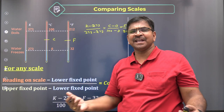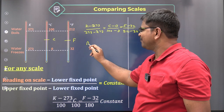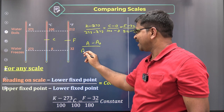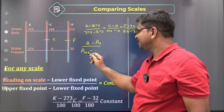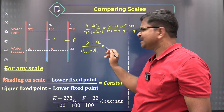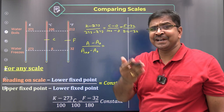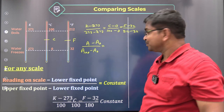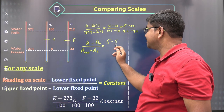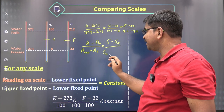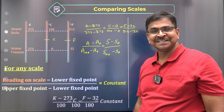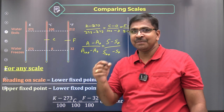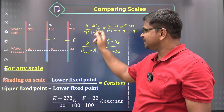You don't need to memorize any derived formula. If you remember the calibration expression (X minus X₀) / (X₁₀₀ minus X₀) equals a constant, you can derive everything. For example, if I give you an A scale, you write: (A minus A₀) / (A₁₀₀ minus A₀). Even if I give you a custom 'Sartvika scale,' you write: (S minus S₀) / (S₁₀₀ minus S₀). You can design your own scale. Calibration is the key.